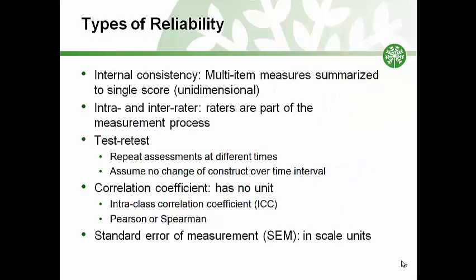There are several types of reliability to consider. Multi-item instruments, like most patient-reported questionnaires and some clinician-rated instruments like the Berg Balance Scale, sum item scores into a total score. Adding items makes sense if the items measure aspects of the same construct and a bigger number means more of that construct. Internal consistency provides an indication of how similar the items are to one another, and is often reported with a coefficient called alpha that ranges between 0 and 1, where values between 0.7 and 0.9 are desirable.